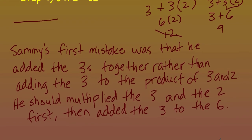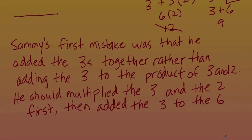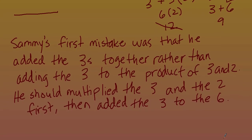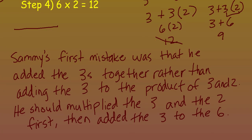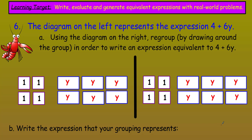So I probably need to write some notes here. We put Sammy's first mistake was that he added the threes together rather than adding the three to the product. He should have multiplied the three and the two first. Then added. What a long explanation. Mr. Warren, you wrote like a paragraph. I know. What can I say? I just got busy. Let's go to the next problem.